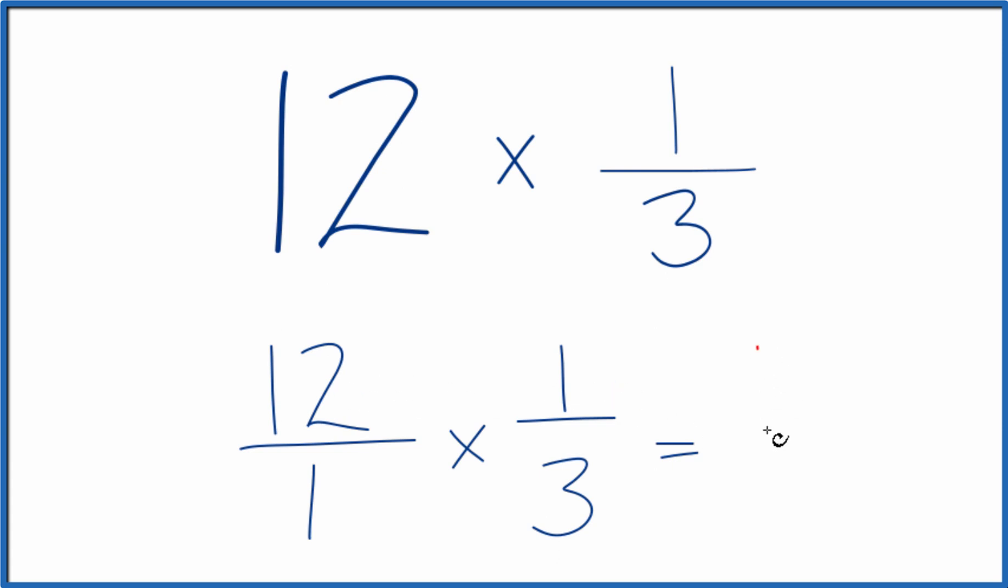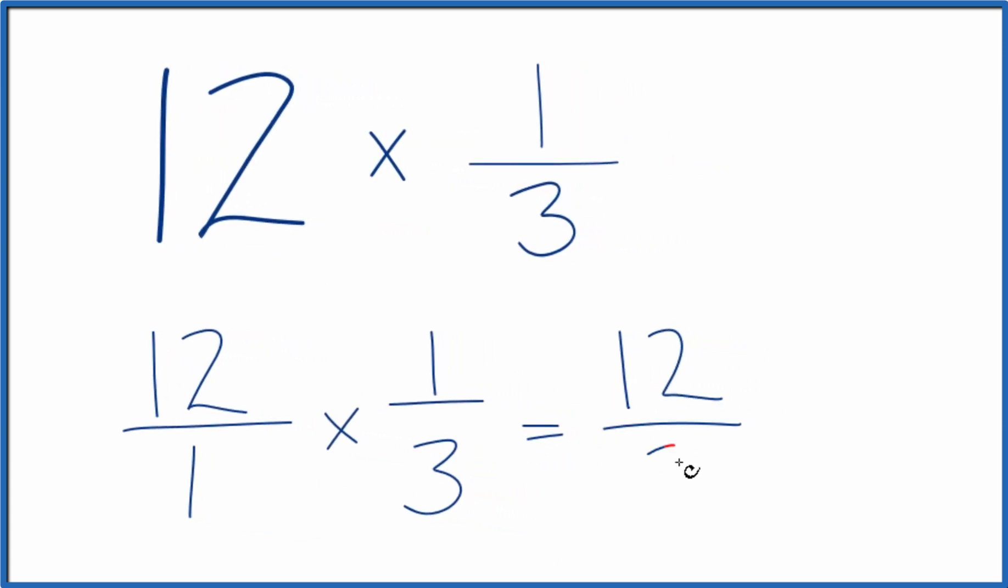So 12 times 1, that's 12. 1 times 3, that's 3. So 12 times one-third equals 12 thirds.